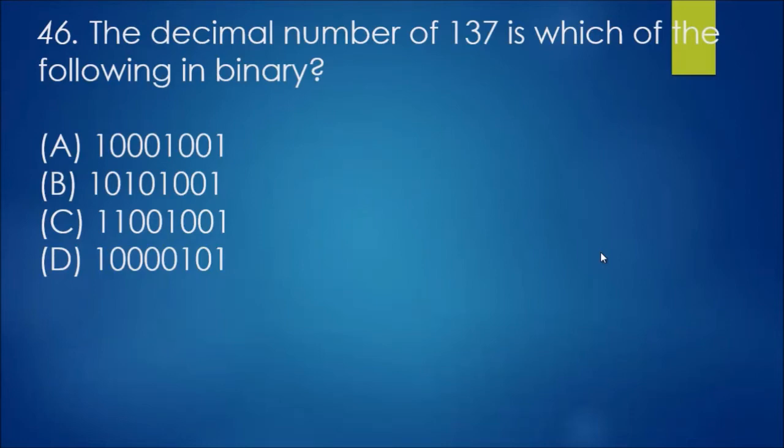Number 46: the decimal number of 137 is which of the following in binary? Let's have a look at how to do binary quickly. We start here with 1, 2, 4, 8, 16, 32, 64, 128. You work in powers of 2 starting from here, 1, 2, and then you basically double up each time. Looking at that, we know that 128, which is 1, which means it's a yes basically, we know that one will be correct, and also there'll be a 1 somewhere else, most likely 2, 4, 8. So that's 128, 136, 137. So the answer will be A: 128 plus 8 plus 1, which equals 137.